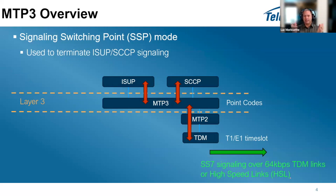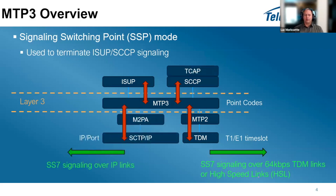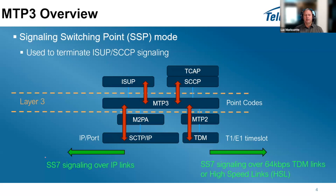You can also use IP to send your data - this is called SIGTRAN. You attach MTP3 to M2PA, and M2PA runs over SCTP with an IP network. All MTP3 packets are packaged into M2PA packets in SCTP and sent over the IP link - this is SS7 signaling over IP, which is SIGTRAN.